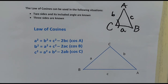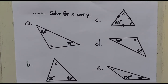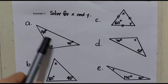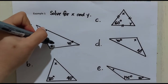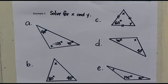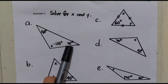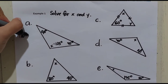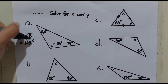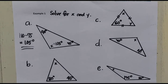Let's have Example 1 — solve for X and Y. Remember that the sum of the measures of the angles of a triangle is 180 degrees. In letter A, if two angles are 40 and 35 degrees, X equals 180 minus 75, which is 105 degrees. In letter B, with angles 80 and 45, X equals 180 minus 125, which is 55 degrees.